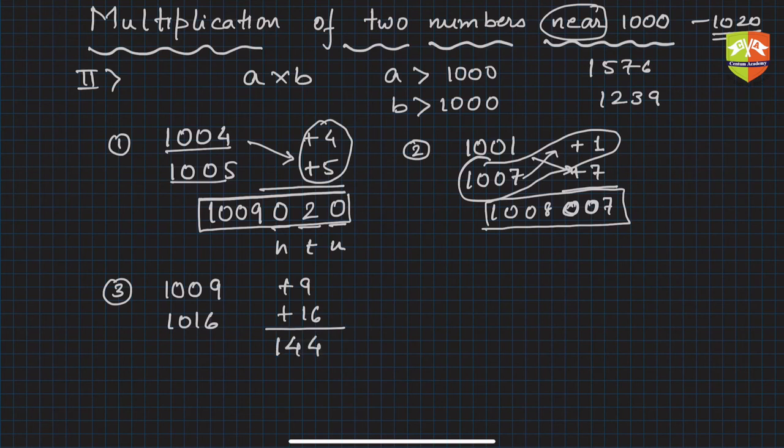And now simply add this. So this is 1025, and this is the product. So you are doing multiplication so fast.